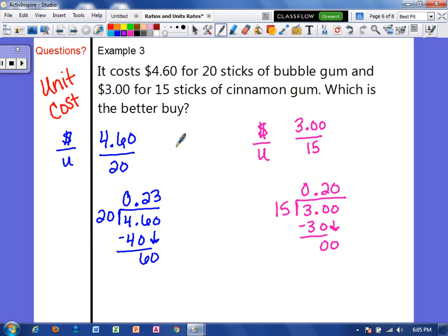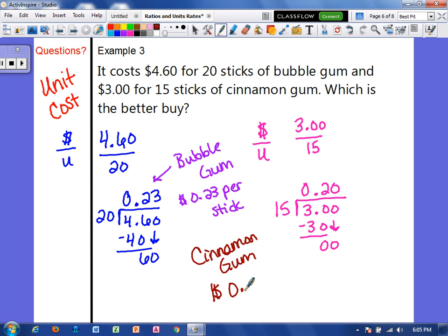So that means that bubble gum costs 23 cents per stick. And cinnamon gum costs 20 cents per stick.